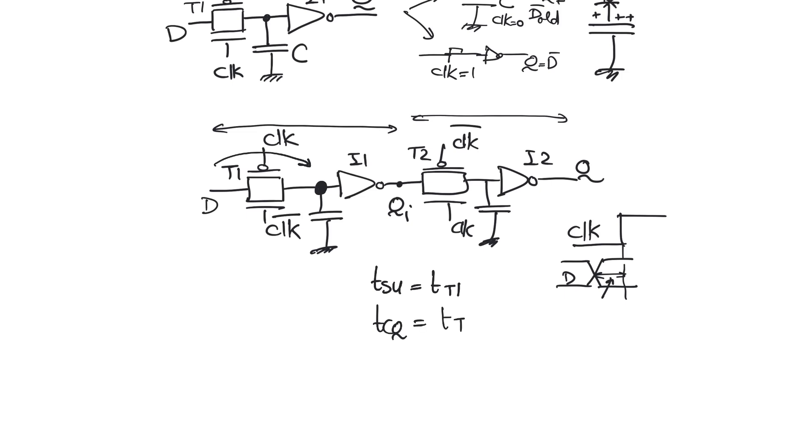Data has to pass through transmission gate T2, through inverter 1, and through inverter 2. So data is ready at the input of inverter 1 and it has to travel all the way to Q, so it's the summation of these three delays.